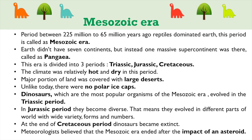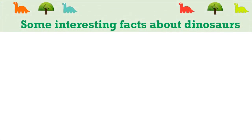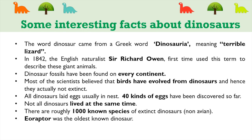Scientists believed that the Mesozoic Era ended after the impact of an asteroid. Let's see some interesting facts about dinosaurs. The word dinosaur came from the Greek word Dinosauria, meaning terrible lizard. In 1842, the English naturalist Sir Richard Owen first used this term to describe these giant animals.